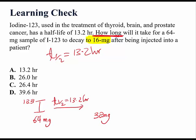After another half-life, which is another 13.2 hours, the 32 mg would have decayed to 16 mg, which is actually the target amount we want to know.